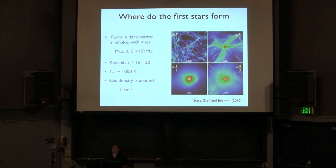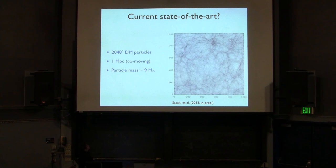A question is raised about the requirement for the halo mass. The answer is that it depends on the virial temperature, which is key, and will be covered in a couple of slides.